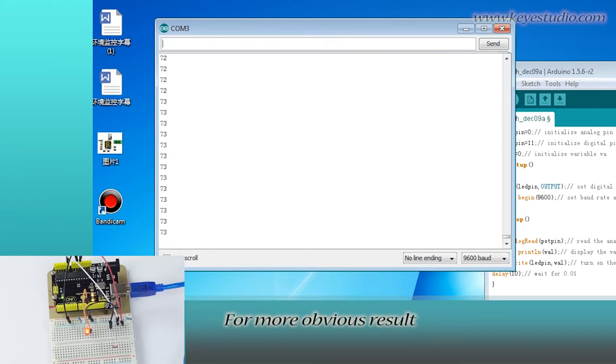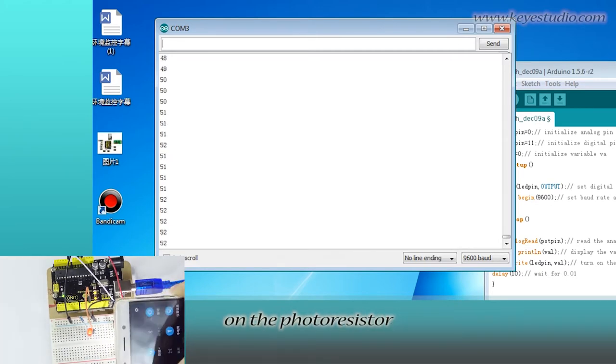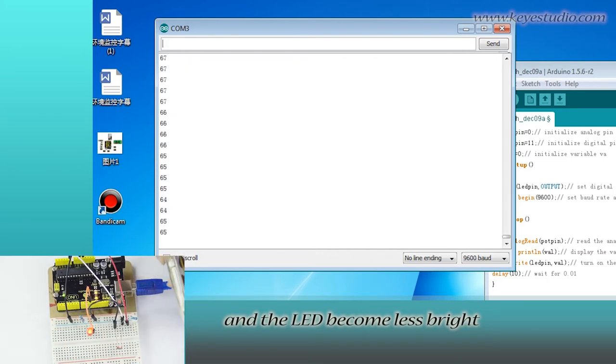For more obvious result, we use flash light to shine light on the photoresistor. You can see the value decreases and the LED becomes less bright.